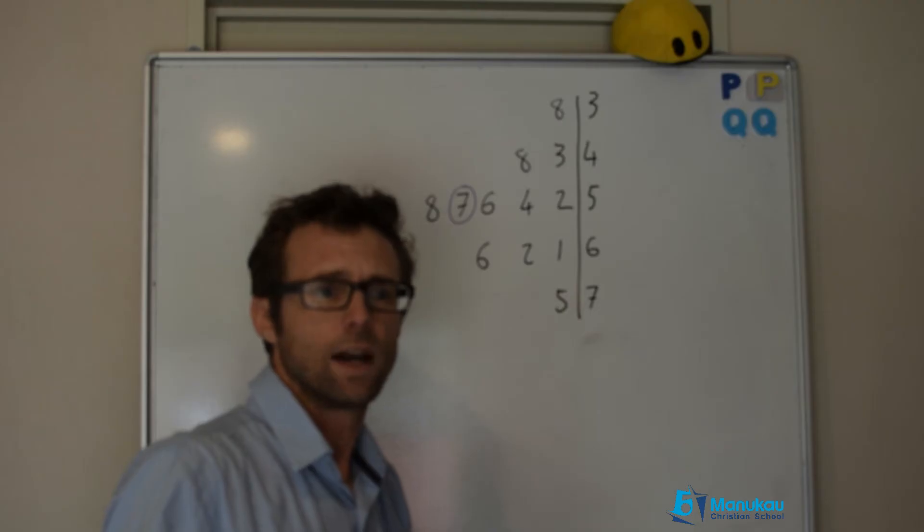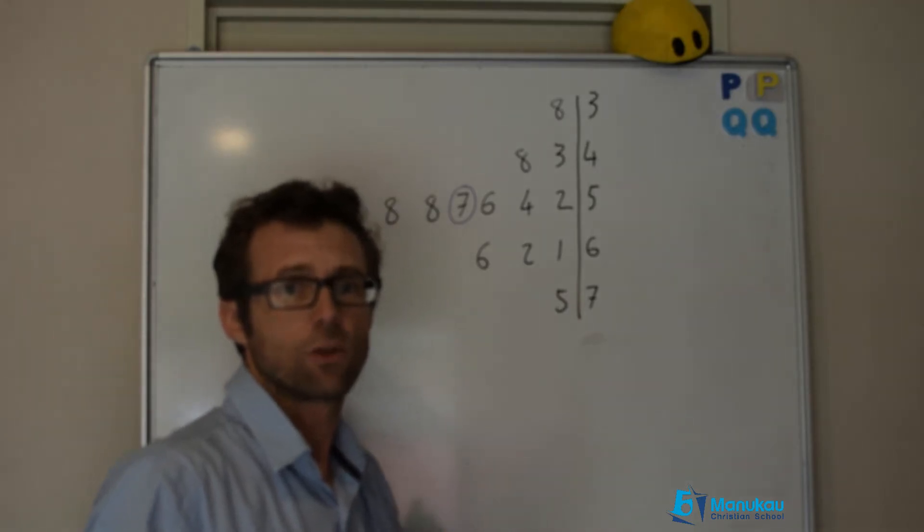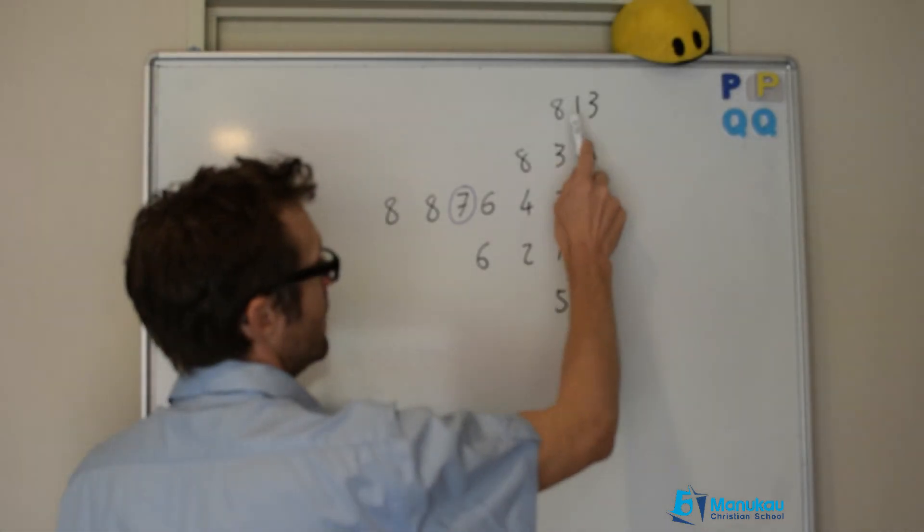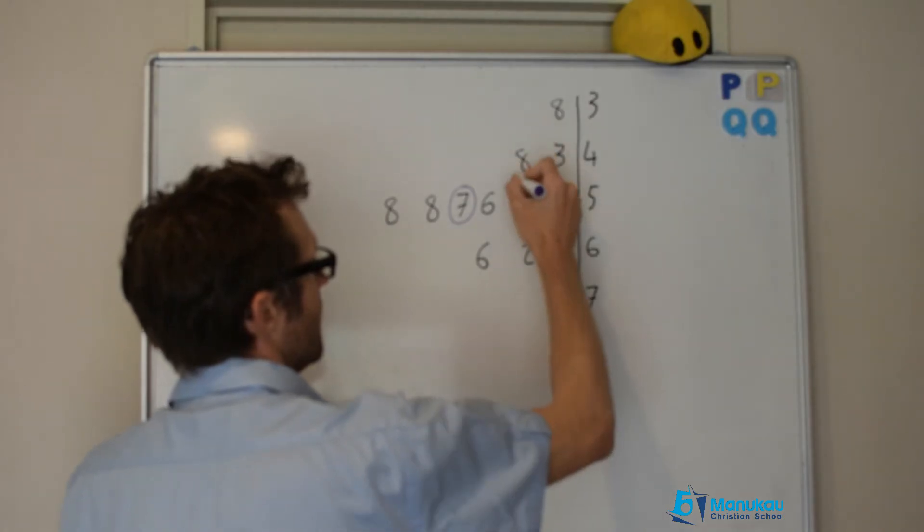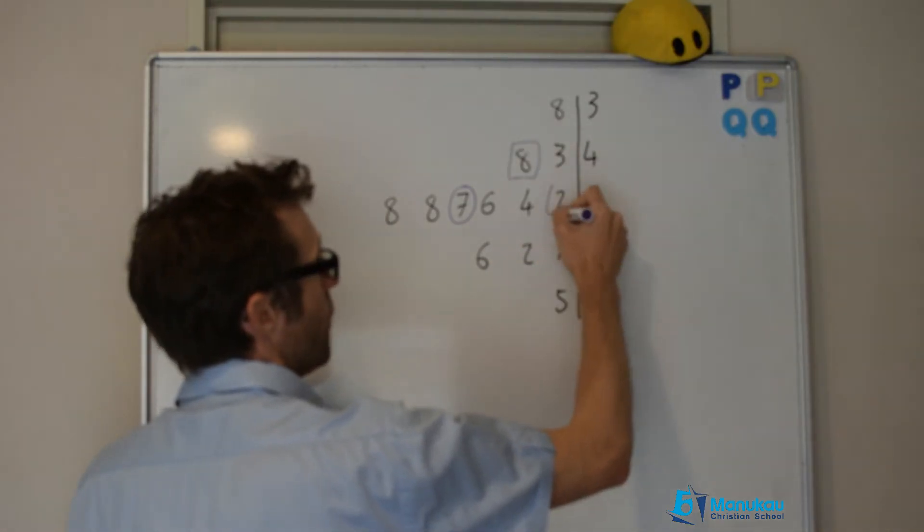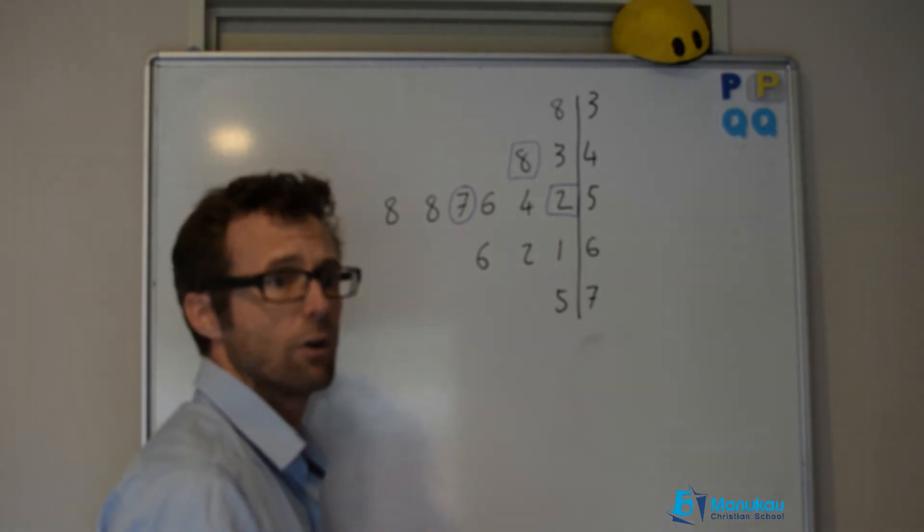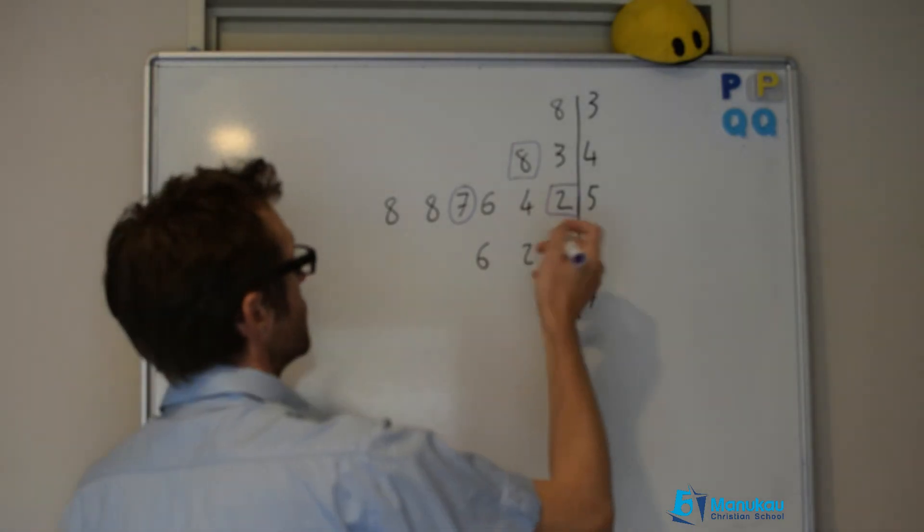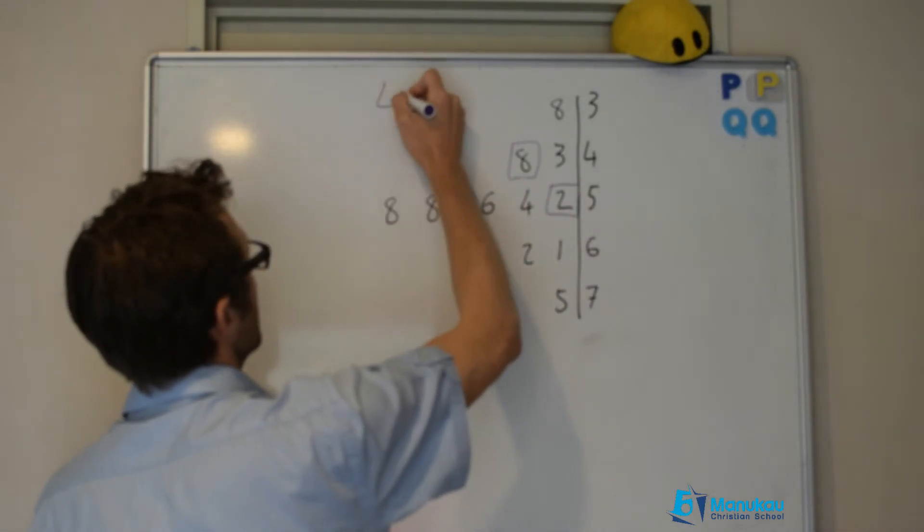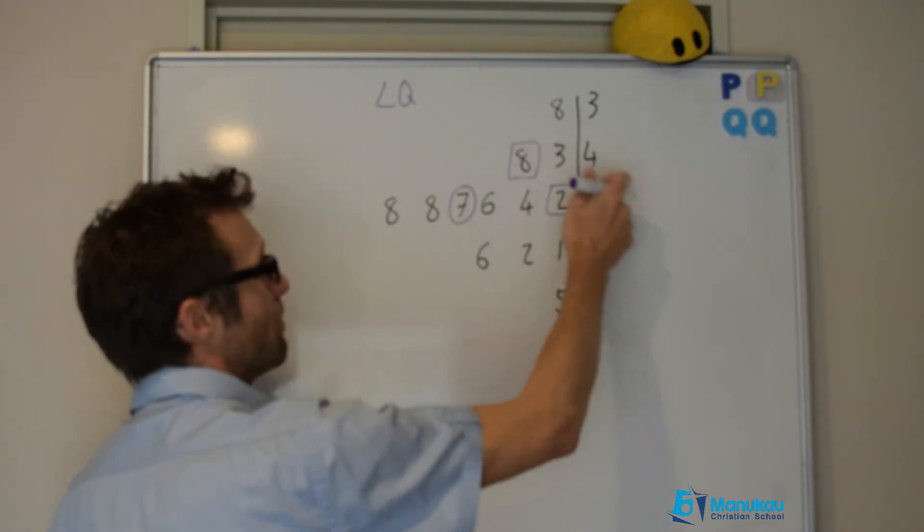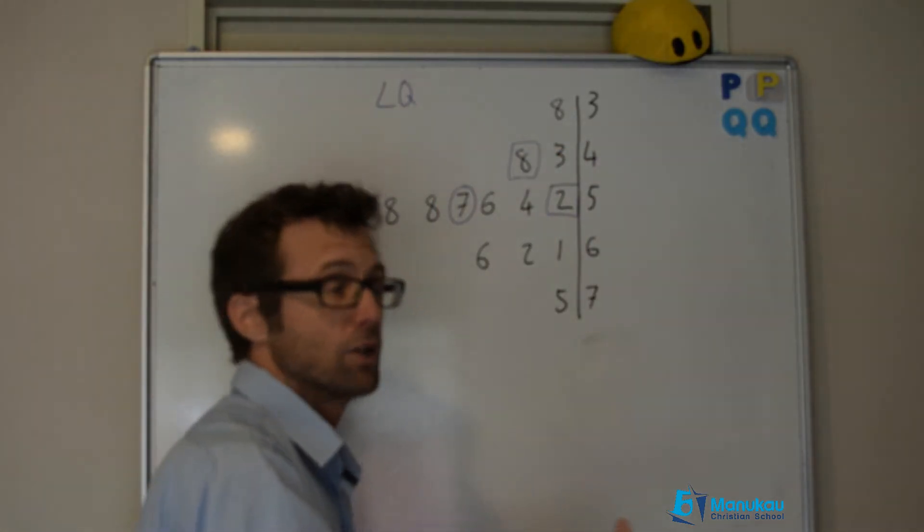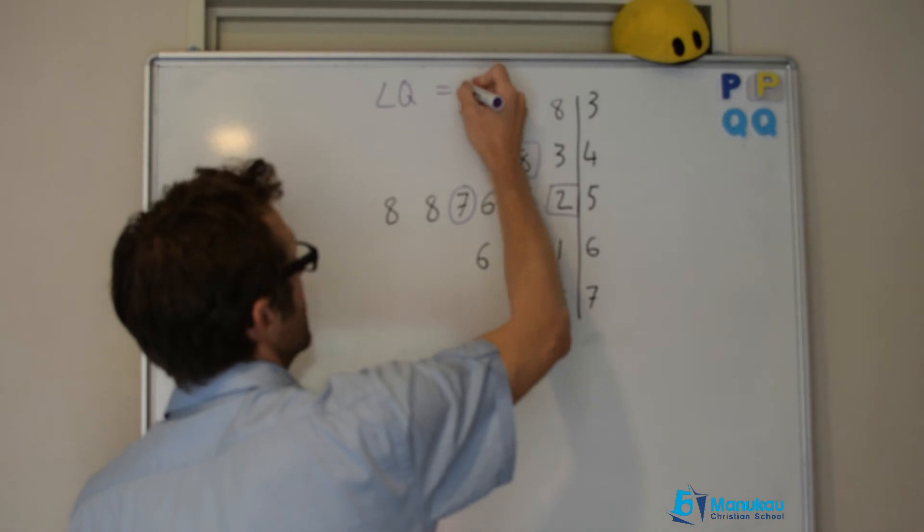At this point we want to find between points 3 and 4. So 1, 2, 3, 4. Halfway between these two is going to be our lower quartile. At this point we know that our lower quartile will be 48 plus 52 divided by 2, which is equal to 50.